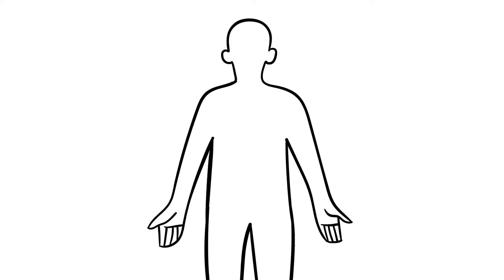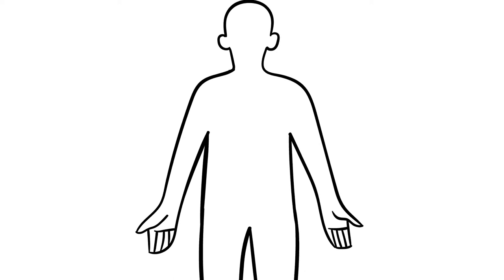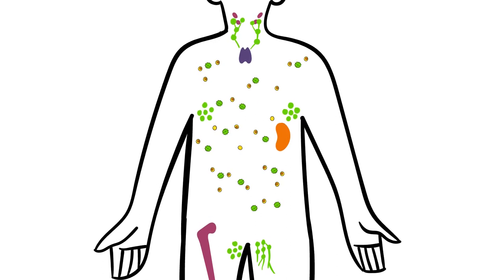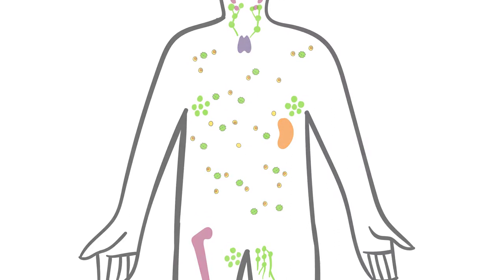The immune system is your body's natural defense system. It's made up of organs, tissues and cells that work together to fight off infections and diseases.